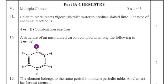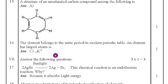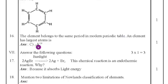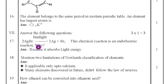Sixteenth question: the element belonging to the same period in the modern periodic table that has the largest atom is potassium. Option C is the answer. Next, seventh main: answer the following questions — three questions. Seventeenth question: the reaction 2AgBr → 2Ag + Br₂ is an endothermic reaction.